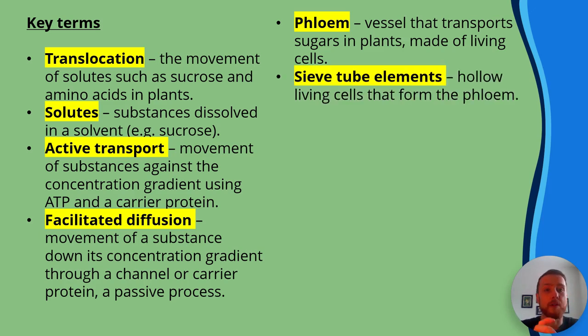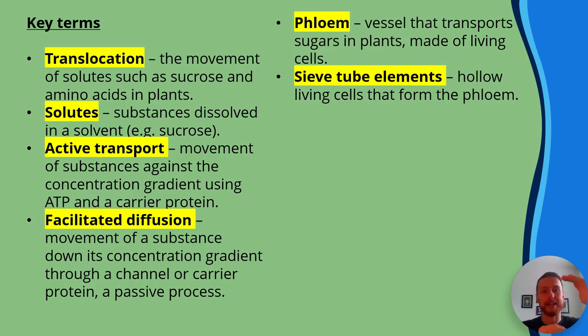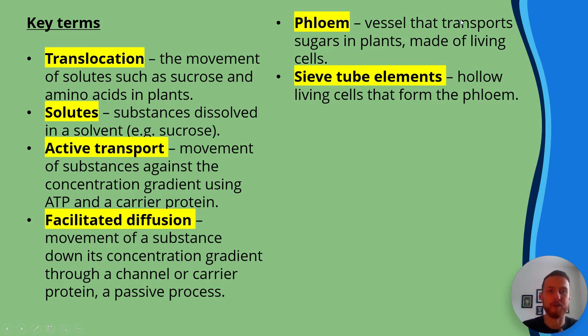Sieve tube elements are the hollow, living cells that form the phloem, and they have a sieve plate at either end, which is like a perforated end of the cell with holes in it so the sugar can pass through.